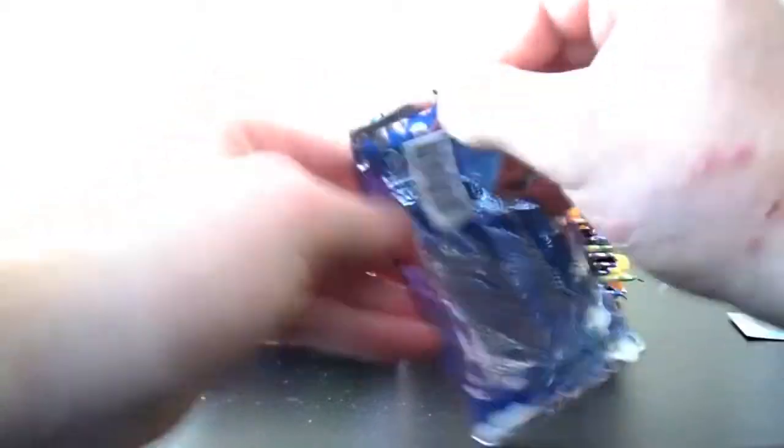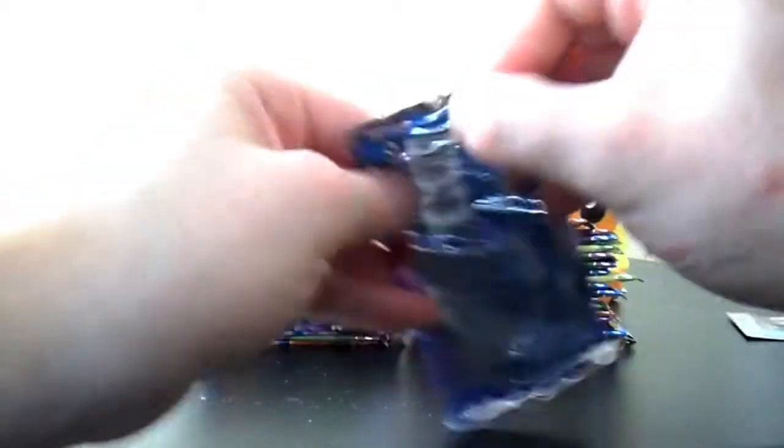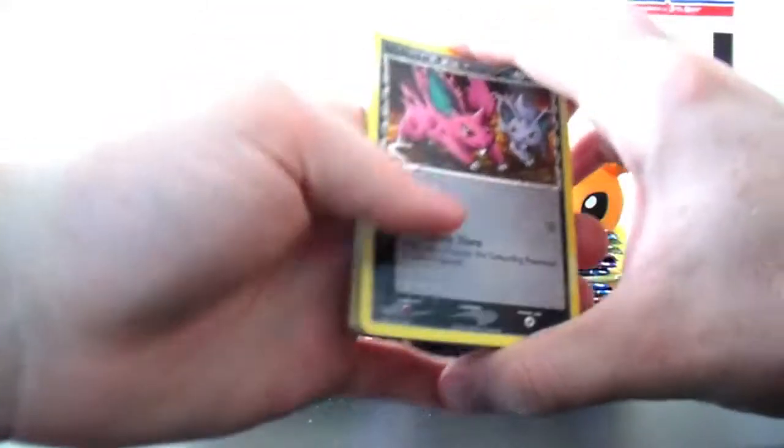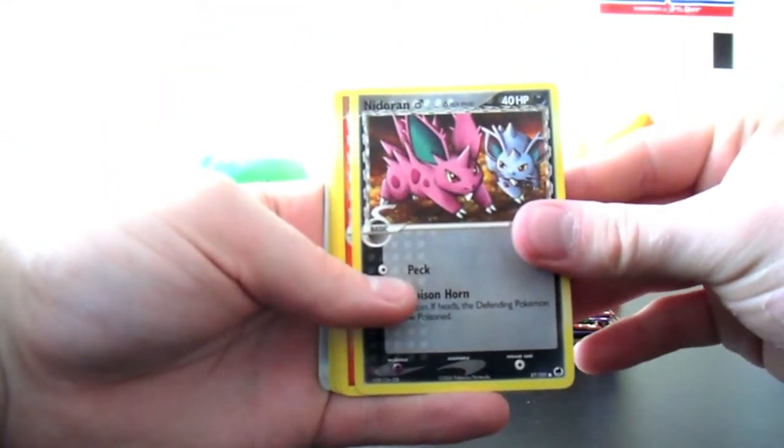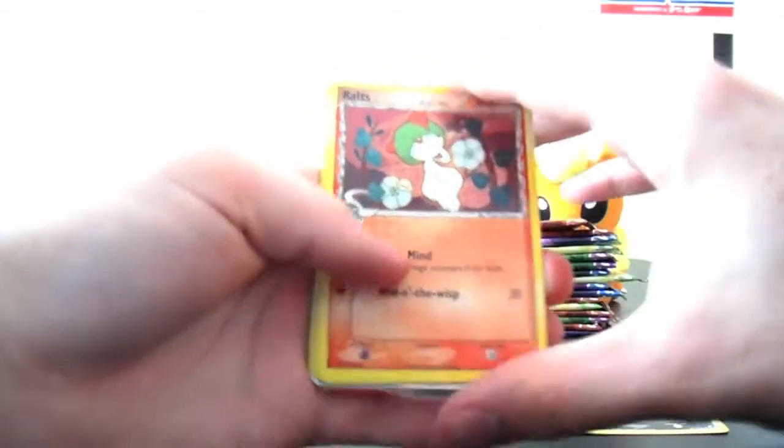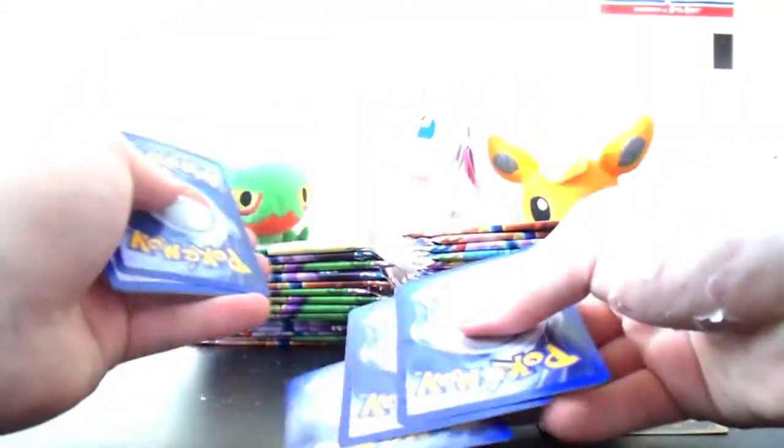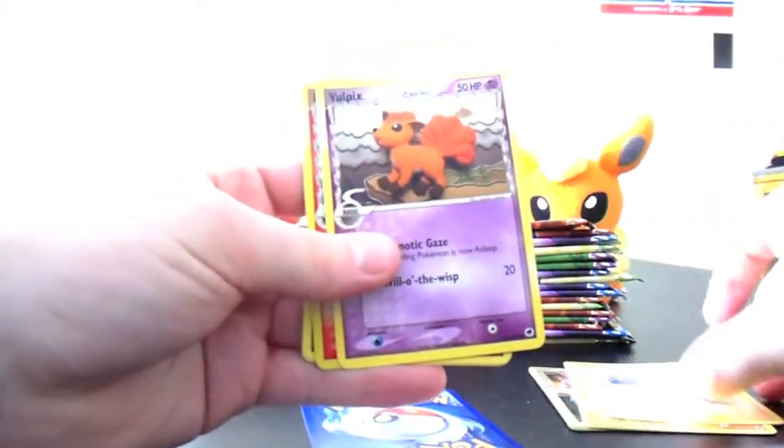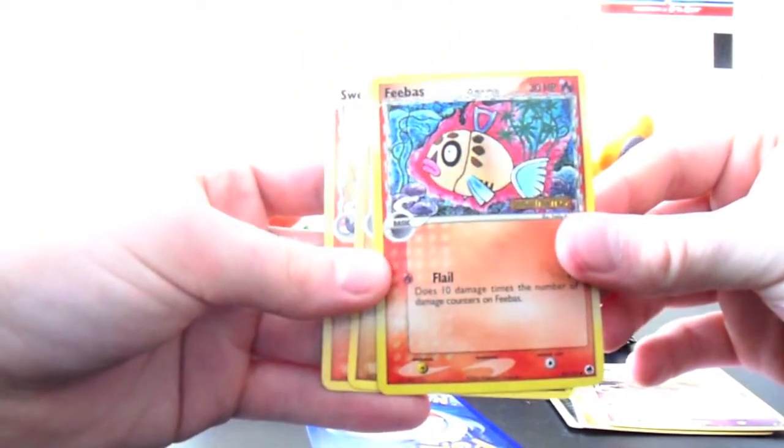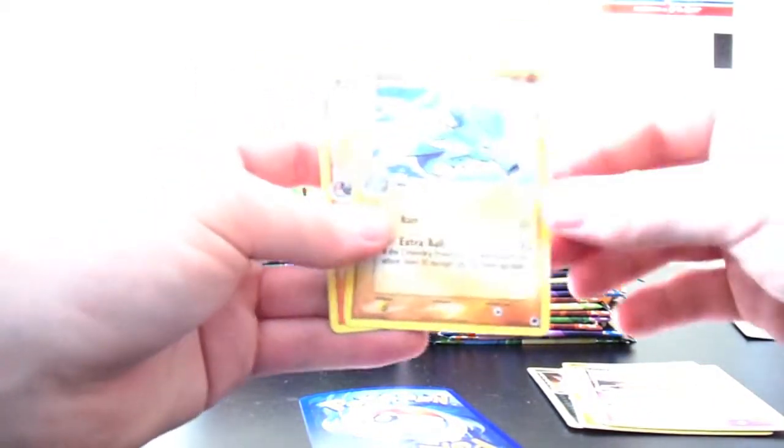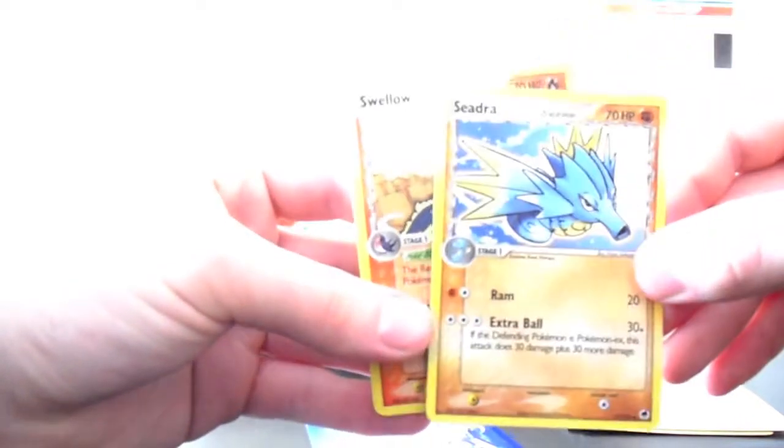So next pack we've got Salamence and Dragonair. Nidoran, looks like it's supposed to be the male one, but the female one's in the background there. Ralts Delta Species, it's a Fire-type Ralts. Kind of cool. And already something very nice back there. We'll just set that down for now. Horsea, Totodile, Vulpix. Awesome. Just amazing artwork. There's a Phoebus Reverse, and that's a common. Seedra Uncommon, and Swellow. Just amazing artwork on these.